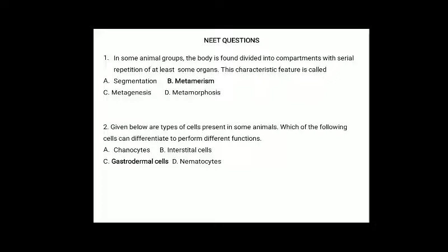Second question: which of the following cells can differentiate to perform different functions? (A) Choanocytes, (B) interstitial cells, (C) gastrodermal cells, (D) nematocytes. The correct answer is option B, interstitial cells, because interstitial cells are reserve cells which can differentiate into any type of cell. Nematocytes are stinging cells used for offense and defense, whereas gastrodermal cells line the gastrodermis and intracellular digestion takes place inside these cells.